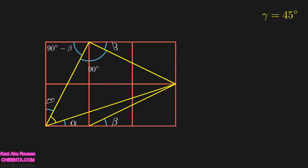This particular angle is 45 degrees. Since any angle of a square is 90 degrees, we have alpha plus beta plus 45 degrees equals 90 degrees. The 45 degrees is the value of gamma, so replacing it gives us alpha plus beta plus gamma equals 90 degrees.